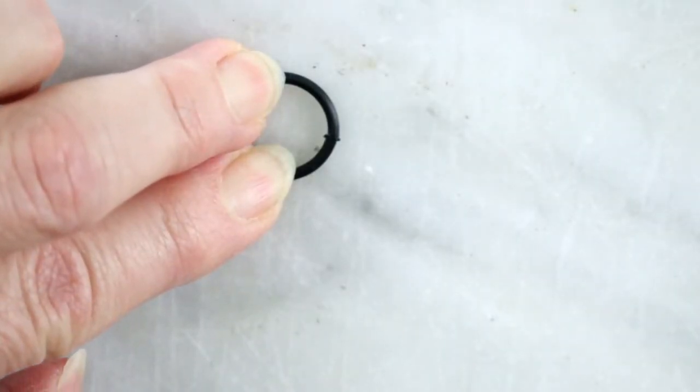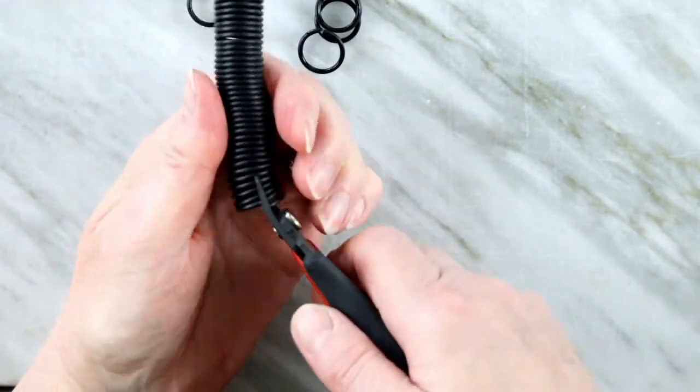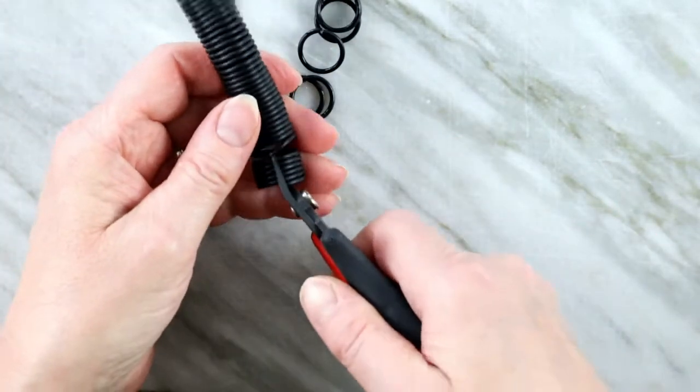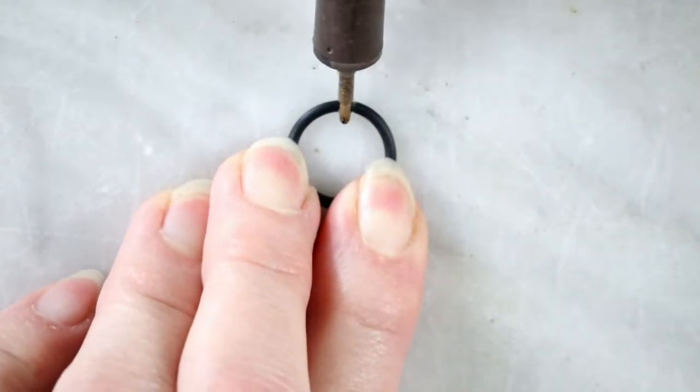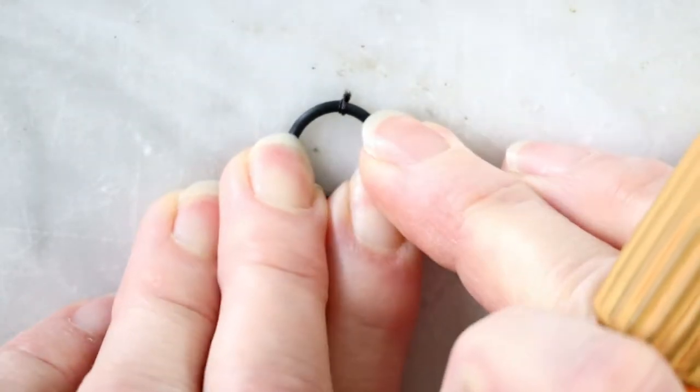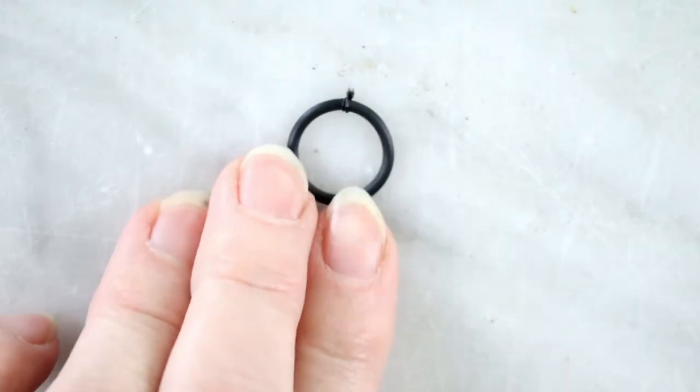So now that we have all these jump rings made, let's make a chain. Starting with the simplest one. The filament jump rings need to be sealed because they are not as stiff as the metal ones and your links wouldn't be safe.